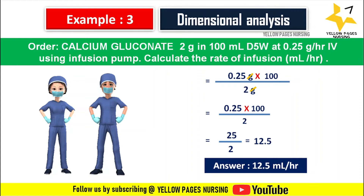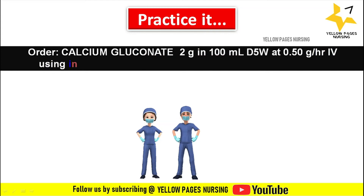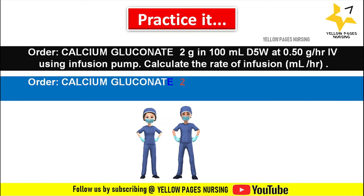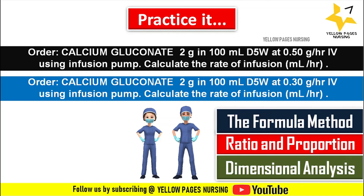Here are some examples for your practice. First: doctor's order calcium gluconate 2 gram in 100 ml D5 water at 0.50 gram per hour IV using infusion pump — calculate the rate of infusion in ml per hour. Second: calcium gluconate 2 gram in 100 ml D5 water at 0.30 gram per hour IV using infusion pump — calculate the rate of infusion in ml per hour. You can solve using all three methods: formula method, ratio and proportion, and dimensional analysis. Mention your answers in the comment box.